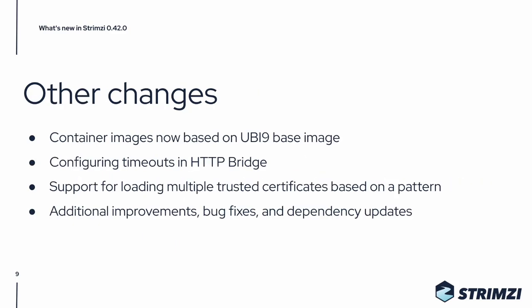There are also many other changes. For example, our container images are now based on the Red Hat UBI 9 base image. You can now configure timeouts in the HTTP bridge for Kafka producers and consumers. And we support loading of multiple trusted certificates based on a pattern from a single secret. And there are of course many additional smaller improvements, bug fixes, and dependency updates.